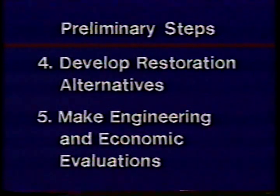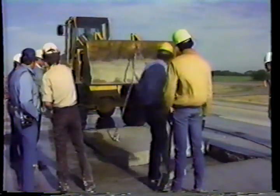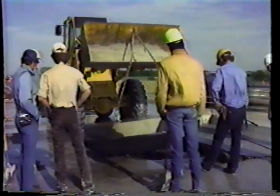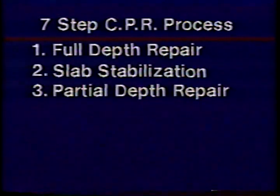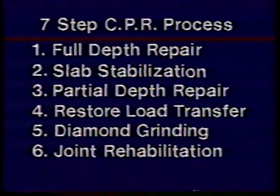Once all this information is gathered and analyzed, steps four and five of the design process can begin. If deterioration has reached advanced stages, rehabilitation may require total removal and recycling of the concrete pavement. If distress is limited to short sections or isolated slabs, concrete pavement restoration procedures may be faster and more economical than total reconstruction. A seven-part restoration program has been developed to repair various types of distress. The seven activities include: full-depth slab repair, slab stabilization, partial-depth slab repair, restoration of load transfer between slabs, diamond grinding, resealing of joints and cracks, and shoulder restoration.